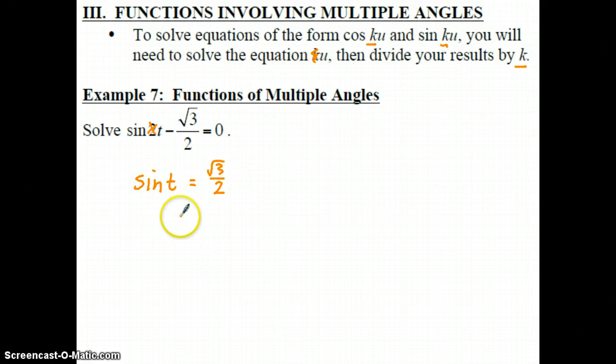So if we find the two quadrants where sine is positive, that's going to be quadrants 1 and 2. And if we want to find the two t values where you get radical 3 over 2, that's your y value. So you want to find in your first quadrant where is your y value radical 3 over 2, and in your second quadrant where is your y value radical 3 over 2.